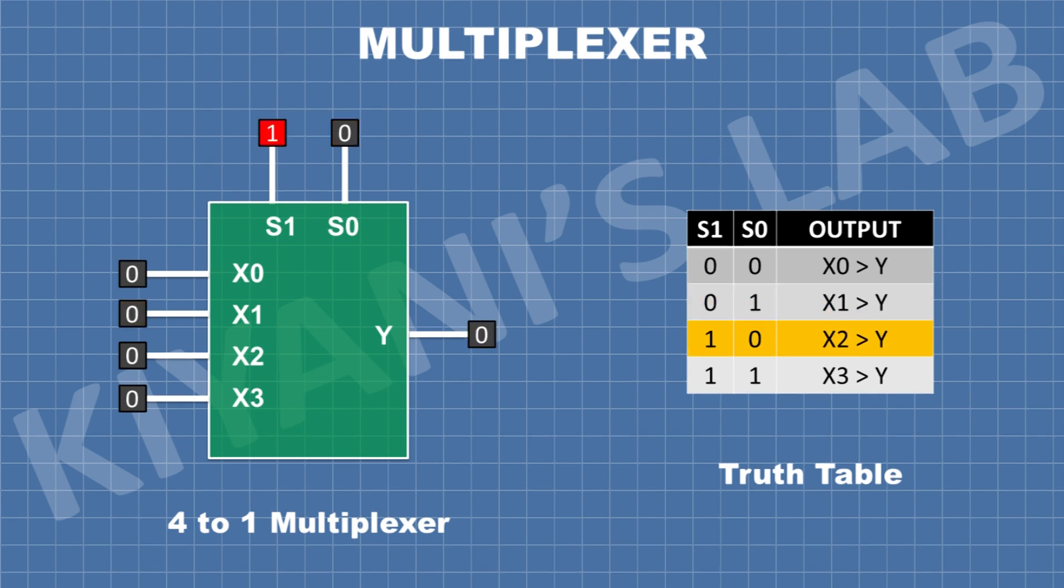When select line S0 is 0 and S1 is 1, the input X2 is selected.